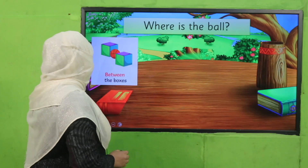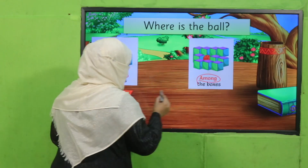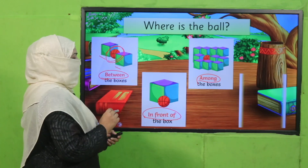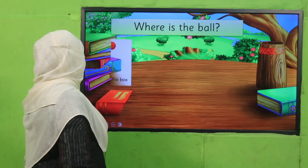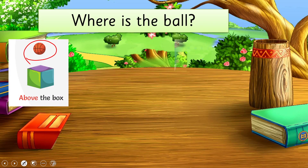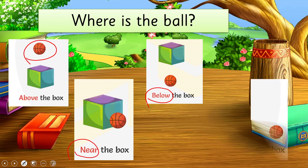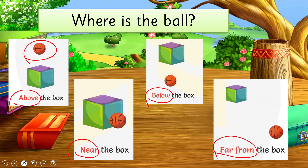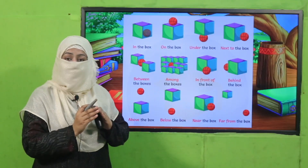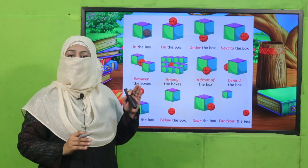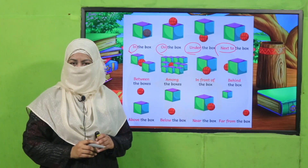Where is the ball now? It is between the boxes — there are two boxes and the ball is between them. Now the ball is among the boxes. Now it is in front of the box. Now it is behind the box. Now it is above the box. Now it is below the box. Now it is near the box. And now it is far from the box. All these words telling us the position of the ball are prepositions.